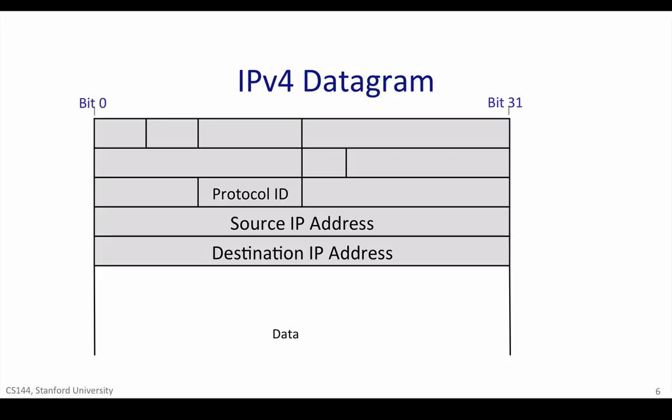If the protocol ID has the value 6, for example, then it tells us that the data contains a TCP segment, and so we can safely pass the datagram to the TCP code, and it will be able to parse the segment correctly. The Internet Assigned Numbers Authority, IANA, defines over 140 different values of protocol ID representing different transport protocols.